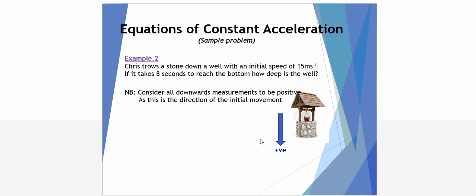Example number two. Chris throws a stone down a well with an initial speed of 15 metres per second. If it takes 8 seconds to reach the bottom, how deep is the well? Let's consider the downwards motion as positive because this is the initial movement. Writing down our known and unknown variables, the initial speed is 15 metres per second. U equals 15 metres per second. T is stated as 8 seconds.